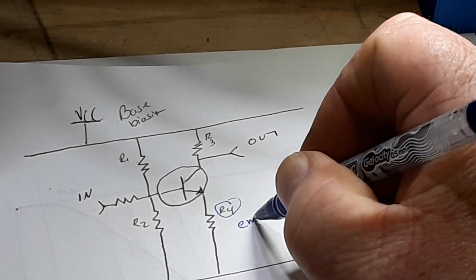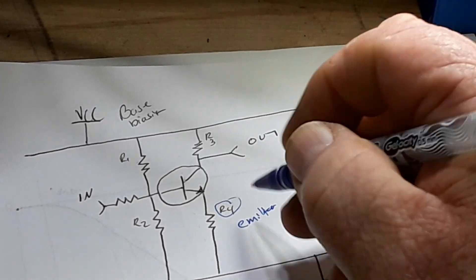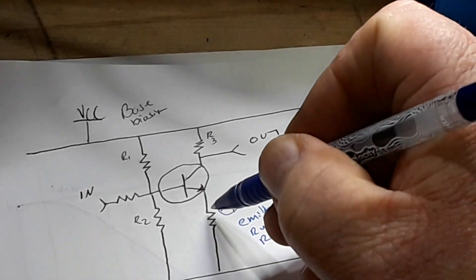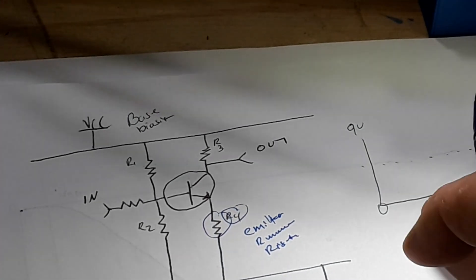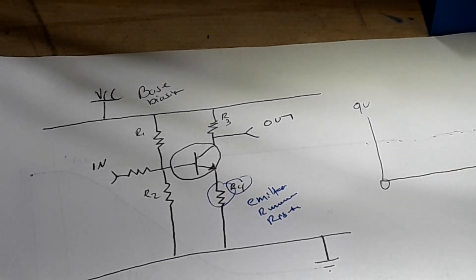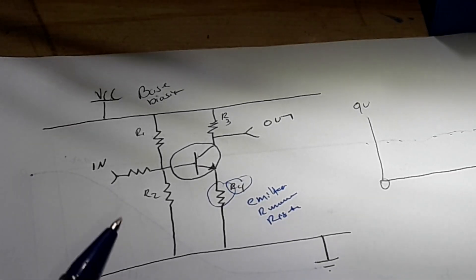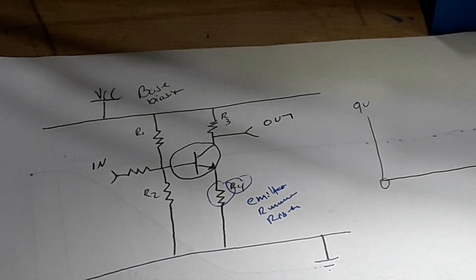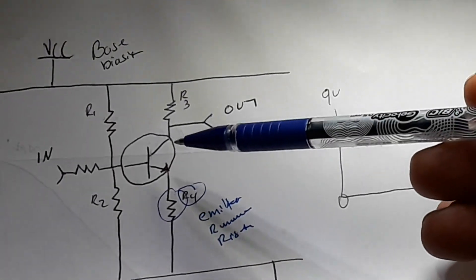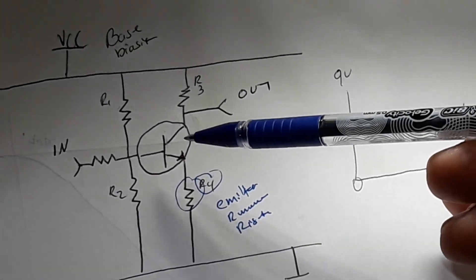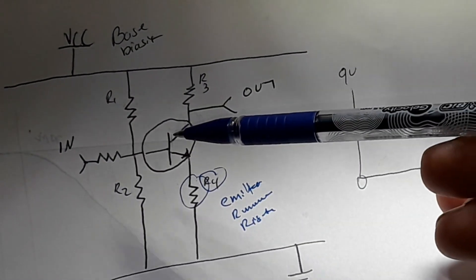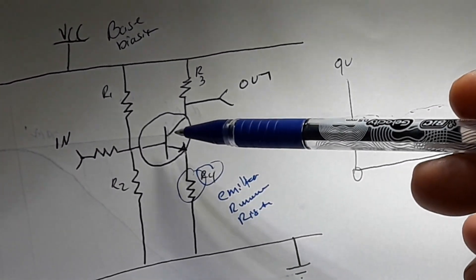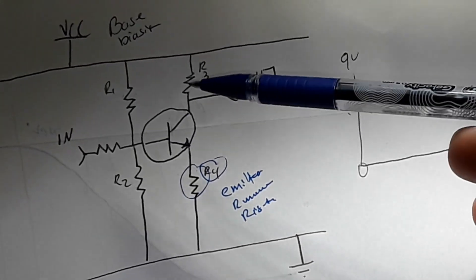Now let's get to the resistor number four. This is your emitter, and I'm going to call it the runaway resistor. This resistor here is going to prevent your transistor from burning up under normal circumstances. If there's a spike or something, that's not going to help much, but a characteristic of the BJT transistors is the hotter they get...